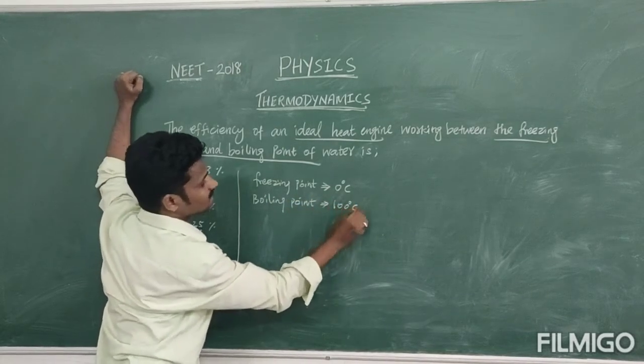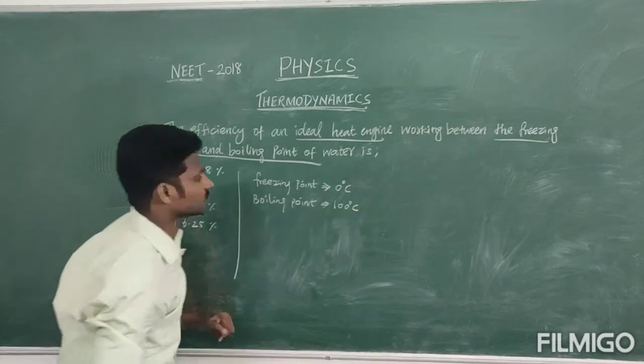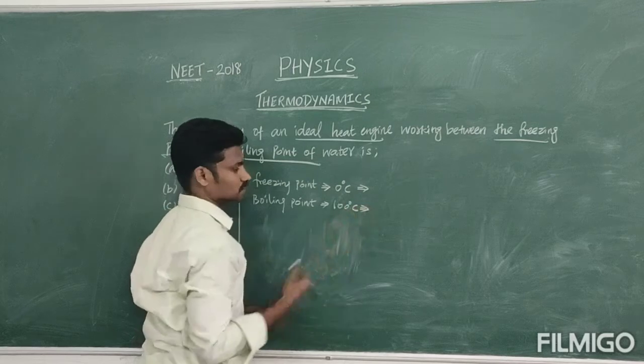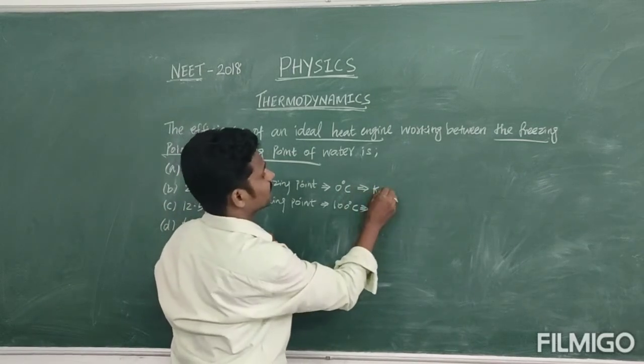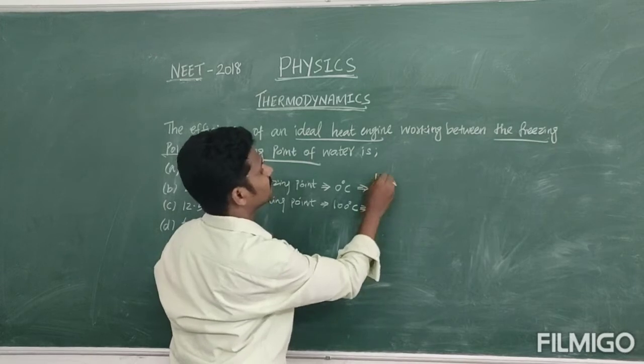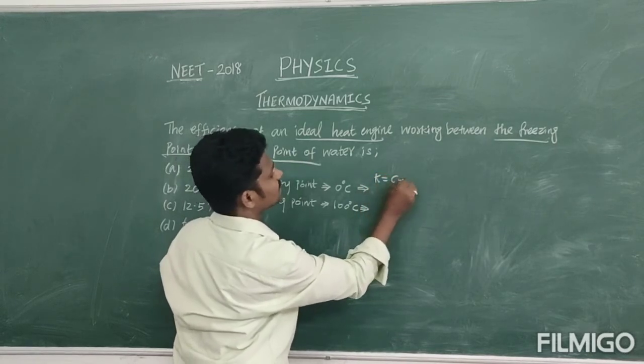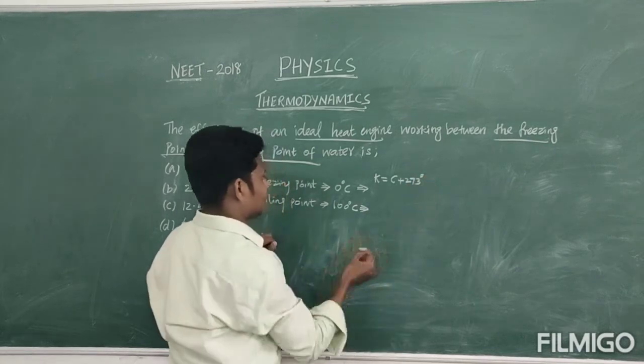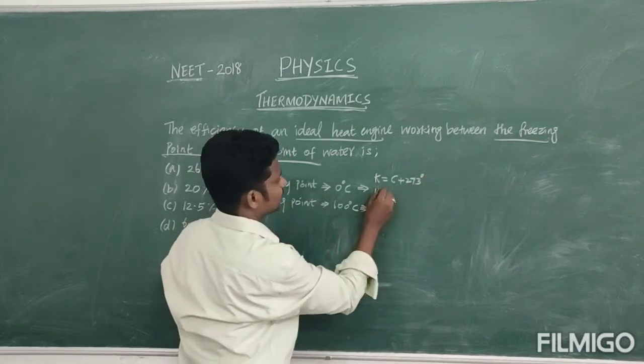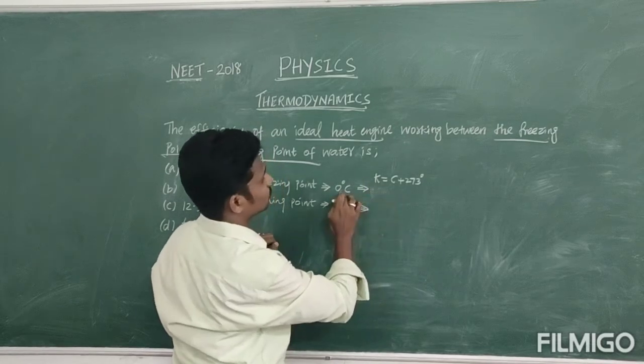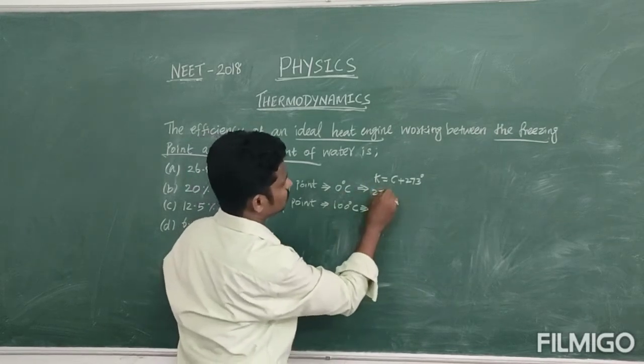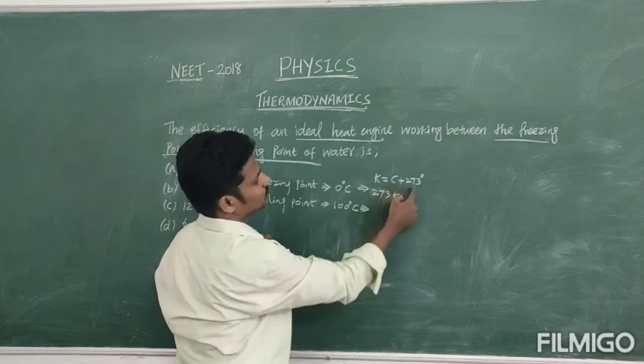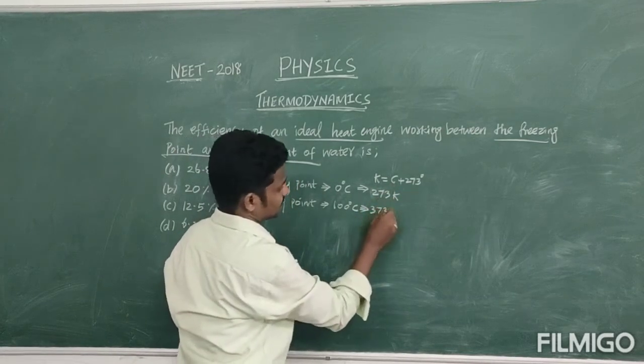So, this value should convert into Kelvin. We know that converted into Kelvin, K is equal to Celsius value plus 273. So, we can write that the Kelvin value for freezing point, 0 degree is equal to 273 Kelvin. Like that here, 100 plus 273, that is 373 Kelvin.